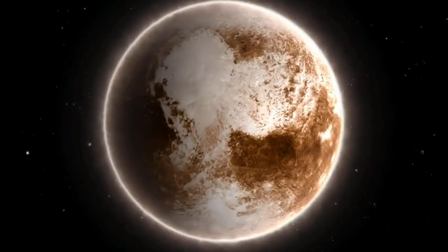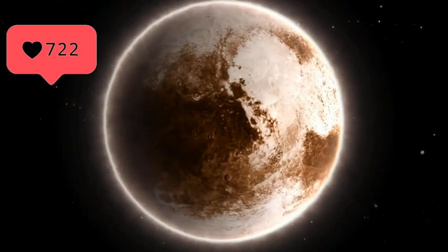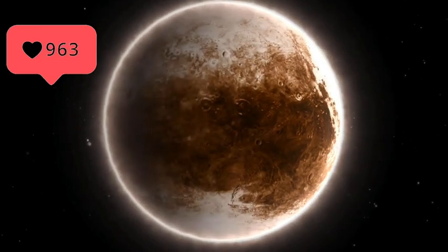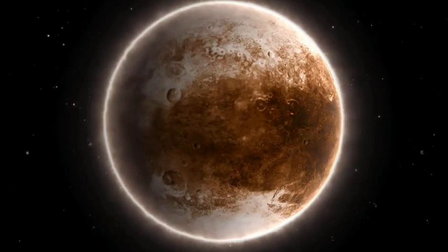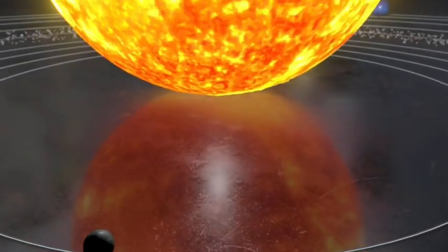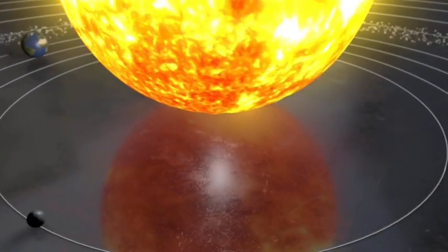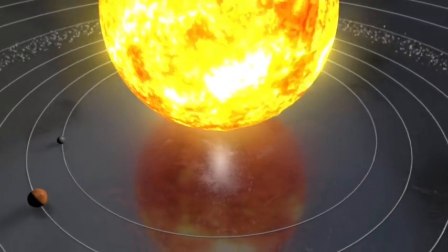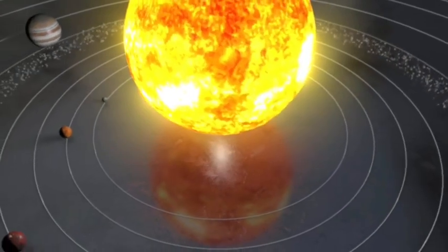Pluto's highly irregular elliptical orbit interferes with Neptune's orbit for 20 years every 248 Earth years. As a result of this shift, Pluto is closer to the Sun than Neptune. This interference occurred for the last time between 1979 and 1999.